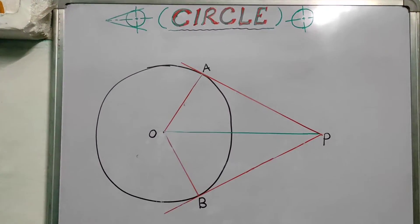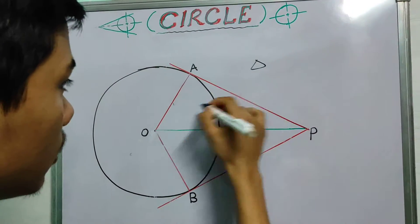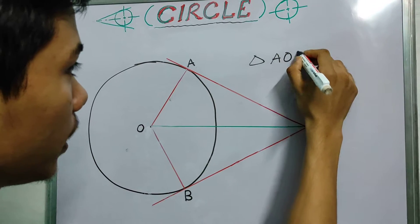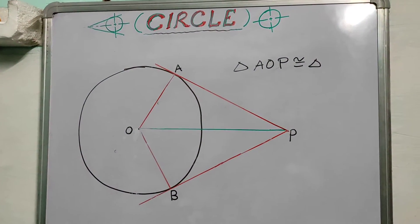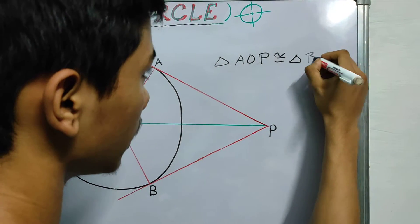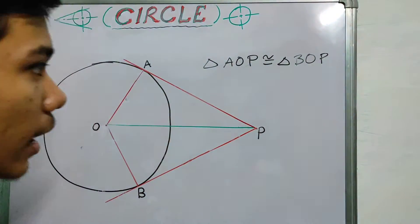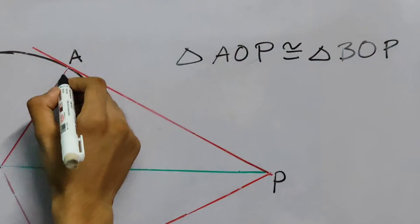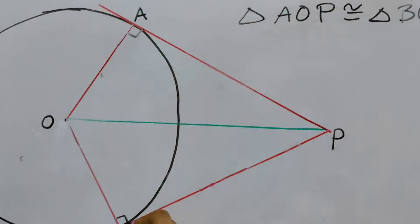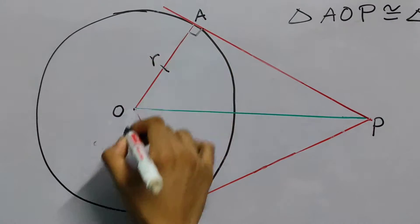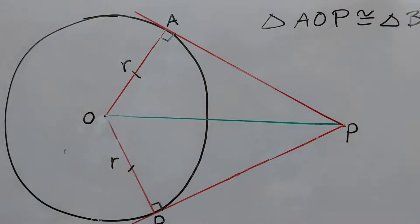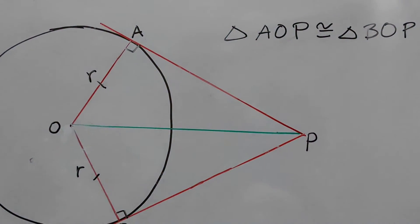And I told you that triangle AOP is congruent to triangle BOP. And you know why this is true, right? Because these two are 90 degrees, these two both have the radii of the same circle, R, R, and OP or PO is common.